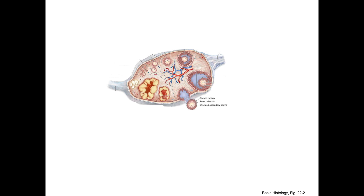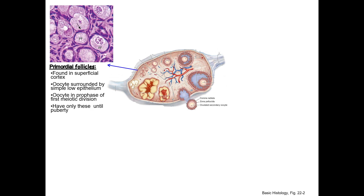In the female, the primordial germ cells arrest in the prophase of meiosis I around four to five months of gestation and remain arrested until puberty. Each of these dormant oocytes is enclosed in a layer of flattened follicle cells surrounded by a basal lamina. These primordial follicles formed prenatally are the only follicles present in the ovary until puberty. Unlike spermatozoa that are continuously produced, all oocytes are generated prenatally and these numbers decline continuously. Only around 0.1% of primordial follicles will mature and be released; the rest will die by a process termed atresia, which begins prenatally and continues after menopause.